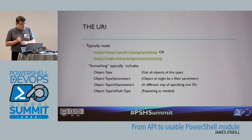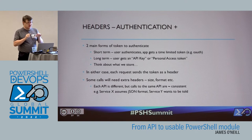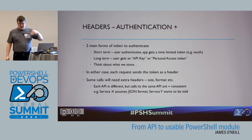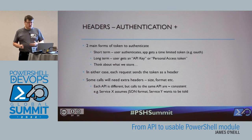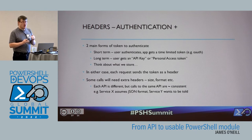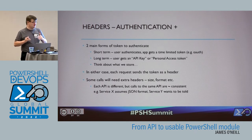Authentication: sometimes it's quite short-term — something like the Graph API, where you do an OAuth-style authentication and get a token that's valid for minutes or hours, not forever. Alternatively, you get a personal access token or an API key — those go by different names but are typically valid for a lot longer, sometimes months or years, sometimes indefinitely. Either way, we're going to send that with every request, and we need to treat those with care because effectively they're as good as a username and password.